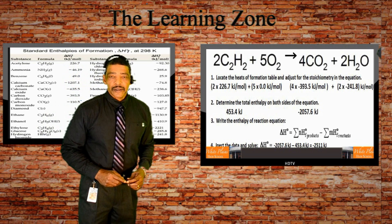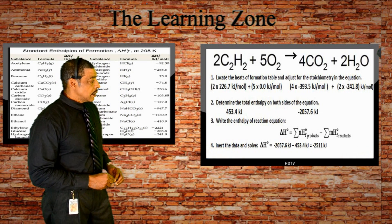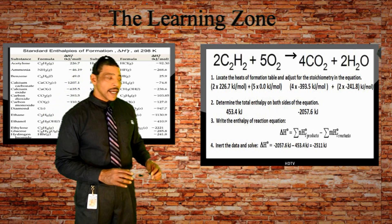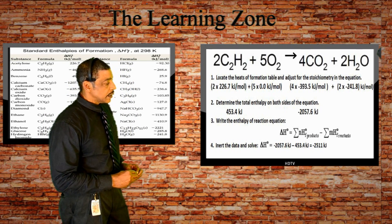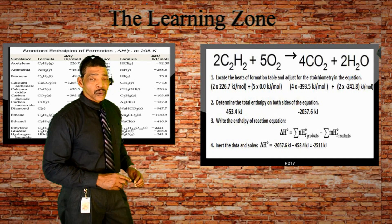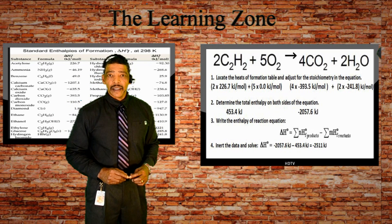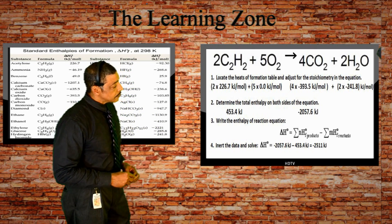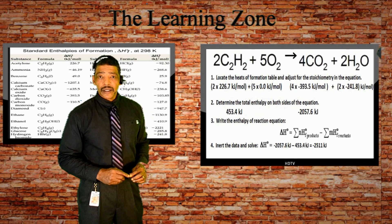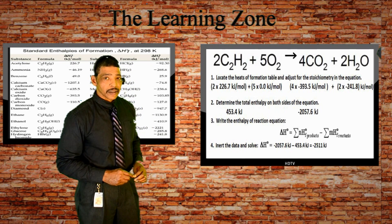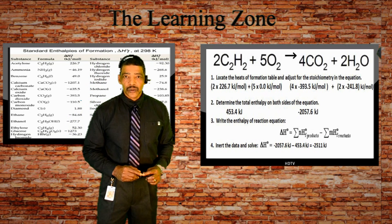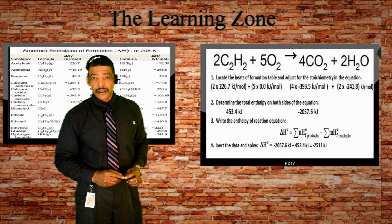The standard heat of reaction for the combustion of ethyne is equal to negative 2057.6 kJ minus 453.4 kJ. And after subtracting 453.4 kJ, which represents the sum of the heats of formation of the reactants, from negative 2057.6 kJ, which represents the sum of the heats of formation of the products, the answer will be negative 2511 kJ.